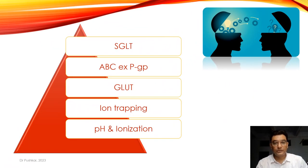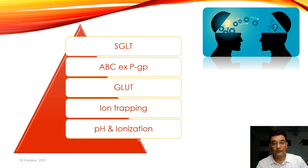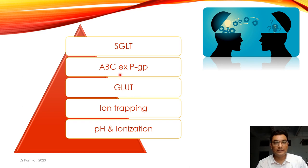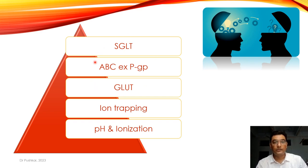Today we are going to understand the effects of pH and ionization on drug mobility. Then we will understand the important concept of ion trapping. And then we will see the ABC transporters — examples include PGP and SGLT — what these are and how they are related to drug transport.